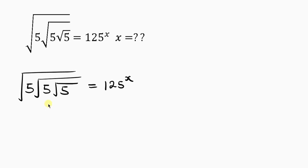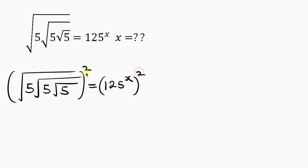The first thing we do is remove this square root. We do that by taking the square of both sides. When we square both sides, the square cancels off the square root.